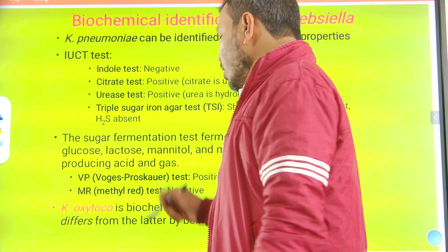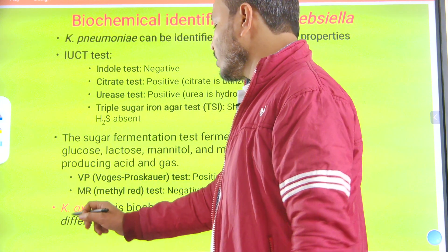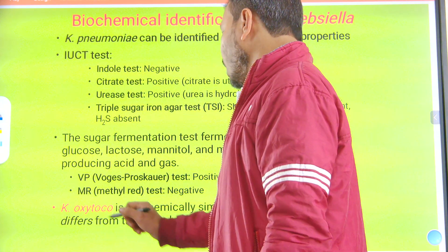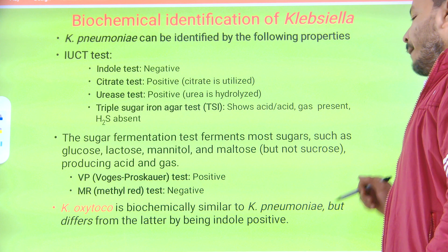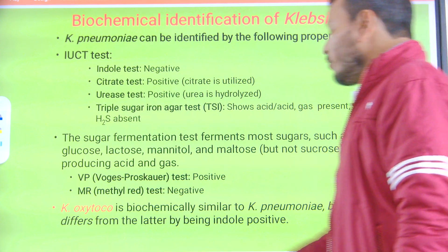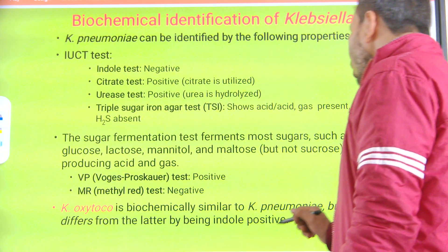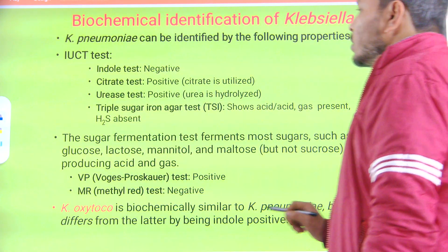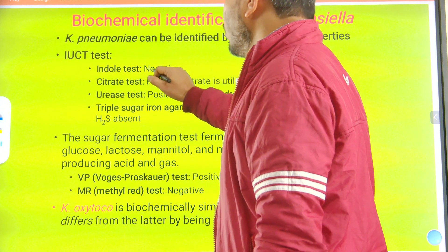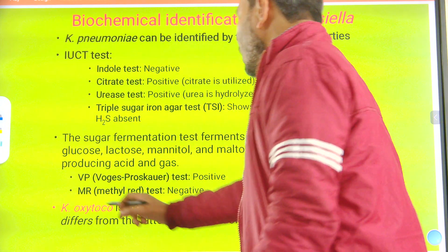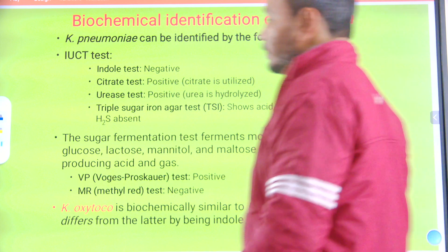There is another species of Klebsiella: Klebsiella oxytoca. It is biochemically similar to Klebsiella pneumoniae but differs by being indole positive. So Klebsiella pneumoniae is indole negative, whereas Klebsiella oxytoca is indole positive.